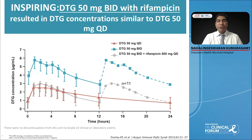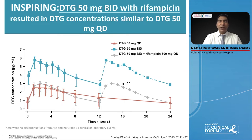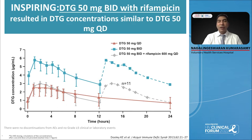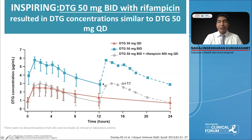Can we give dolutegravir in patients with tuberculosis? Studies have been done — the INSPIRING study looked at the pharmacokinetics of dolutegravir interactions with rifampicin, which very clearly shows that if you are giving dolutegravir along with rifampicin you have to double the dose of dolutegravir from 50mg once daily to twice daily to get therapeutic concentrations to suppress viral load. So with dolutegravir you have to double the dose when using rifampicin, and if using a combination of TDF/FTC/dolutegravir you also need to add an extra 50mg dose of dolutegravir along with rifampicin.